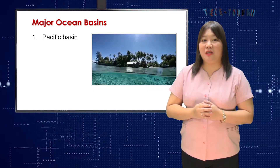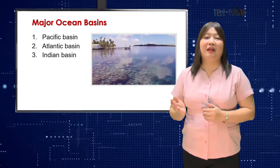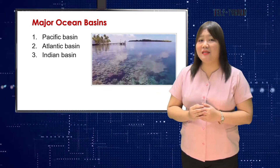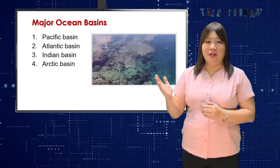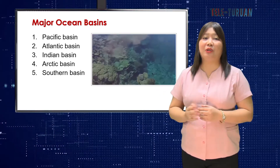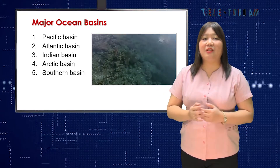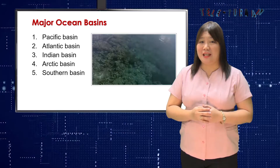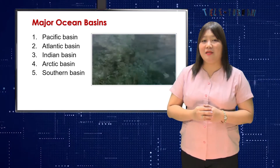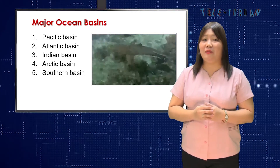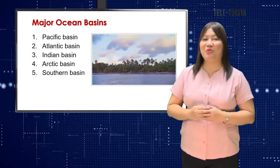The five major ocean basins are the Pacific Basin, the Atlantic Basin, the Indian Basin, the Arctic Basin, and the Southern Basin. Many smaller basins are often considered oceanic basins, such as the North Elysian Basin between the Pacific and Arctic Oceans.